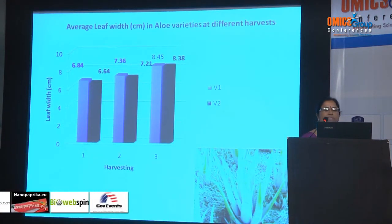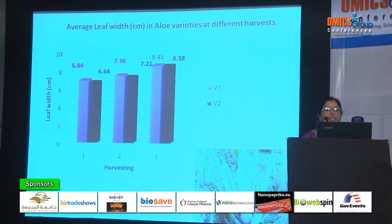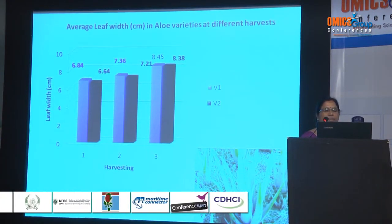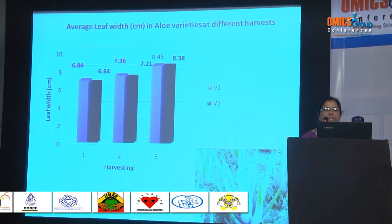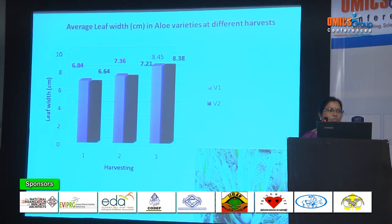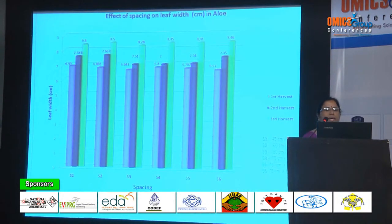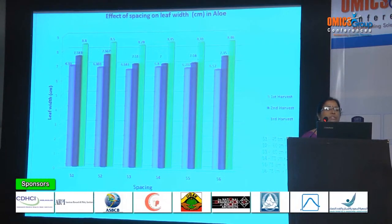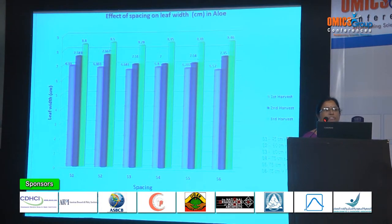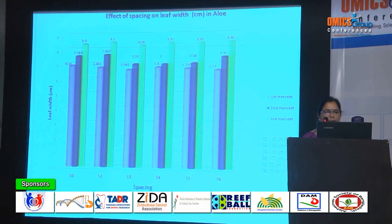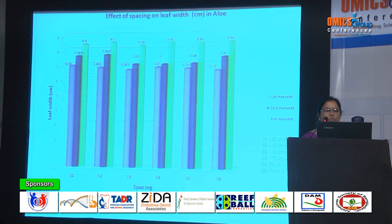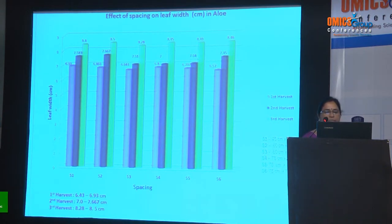This slide shows the average width of the aloe vera leaf at different harvests. There is no significant difference between the two varieties with reference to leaf width. The average leaf width during the first harvest is around 6.4 to 6.8 cm, whereas in the third harvest it goes to 8.38 to 8.45 cm. Regarding the effect of spacing on leaf width, there is also no significant difference; the range during the first harvest is 6.43 to 6.53 cm, second harvest 7.0 to 7.67, and third harvest 8.28 to 8.5 cm.